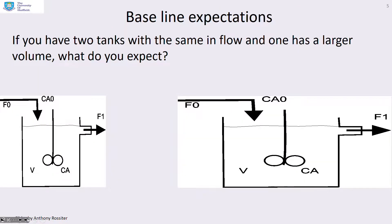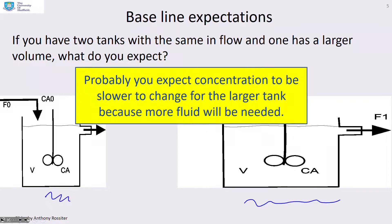Baseline expectations then. If you had two tanks, the one on the left which is small and the one on the right which is very big, and assume they have the same flow. What do you expect? Well hopefully you would expect the concentration in the right hand tank, this large tank, to be much slower to change because it's got a lot more fluid in it, so you need a lot more fluid to come through the inlet flow before you can make a significant change. So that's going to take longer.